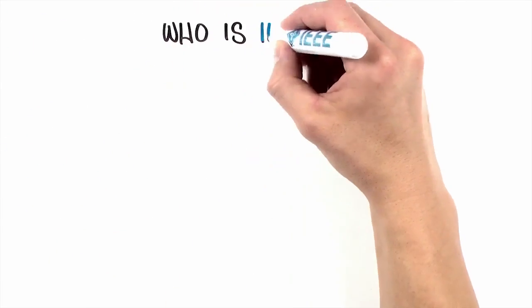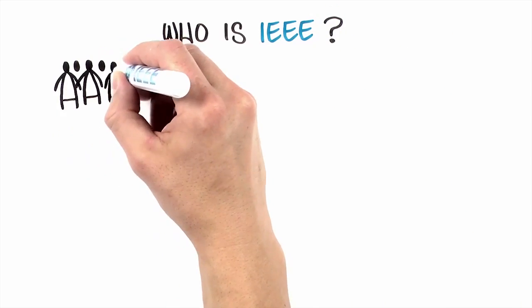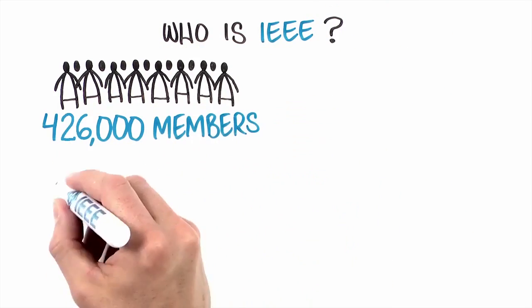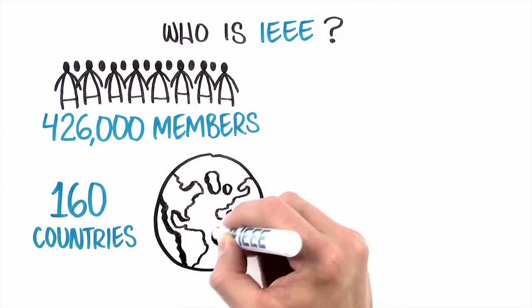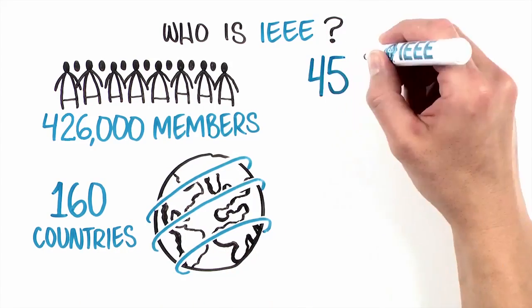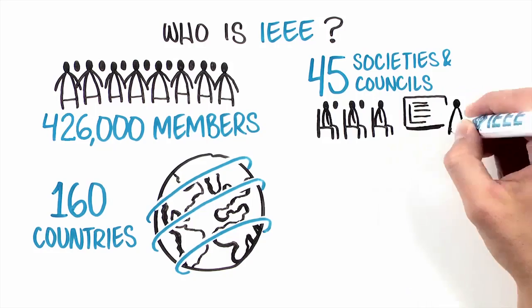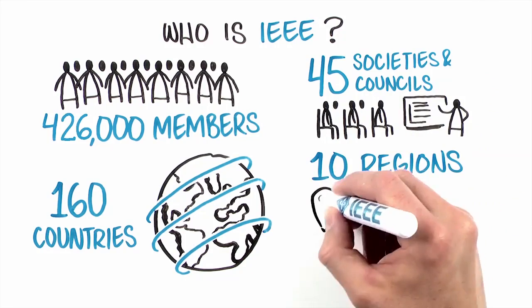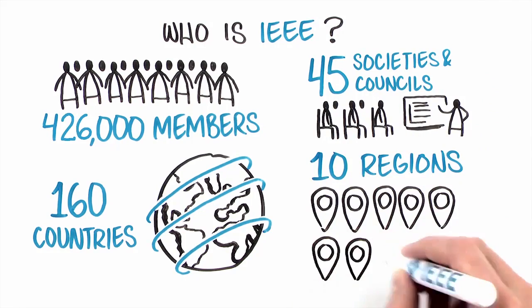But who is IEEE? We're a global community of more than 426,000 members in over 160 countries around the globe. We have 45 societies and technical councils and 10 geographic regions supporting our worldwide technology community.